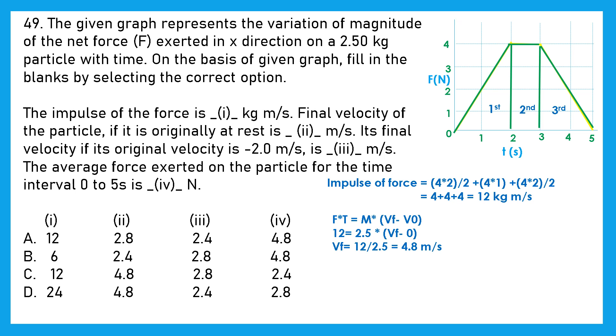Now moving to the second one, we have to find the final velocity of the particle if it is originally at rest. That means the initial velocity is 0. We will apply the formula that is F into T equal to M into final velocity minus original velocity. And we will get our final velocity which is equal to 4.8 as per the equation.